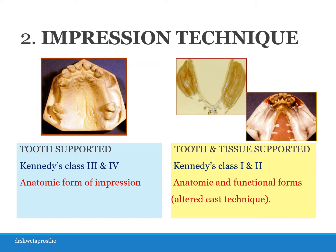Support actually decides all the components we are planning for a cast partial denture, and it becomes the deciding factor for choosing the impression technique as well. There are two types of impressions: one is the anatomic, and the second is the functional or physiologic. An anatomic impression will suffice if the prosthesis is tooth supported — here we need to record the teeth primarily. For a tooth supported RPD, we make a normal anatomic impression as we do for partially dentulous cases, using an elastic impression material like alginate or silicone in a stock or custom tray.